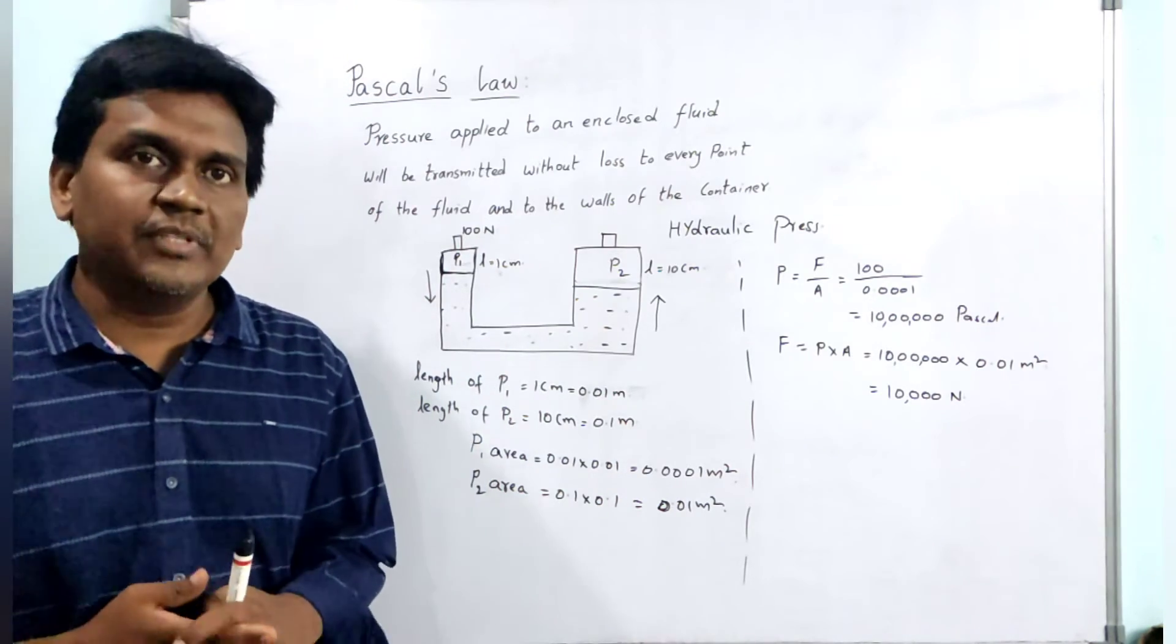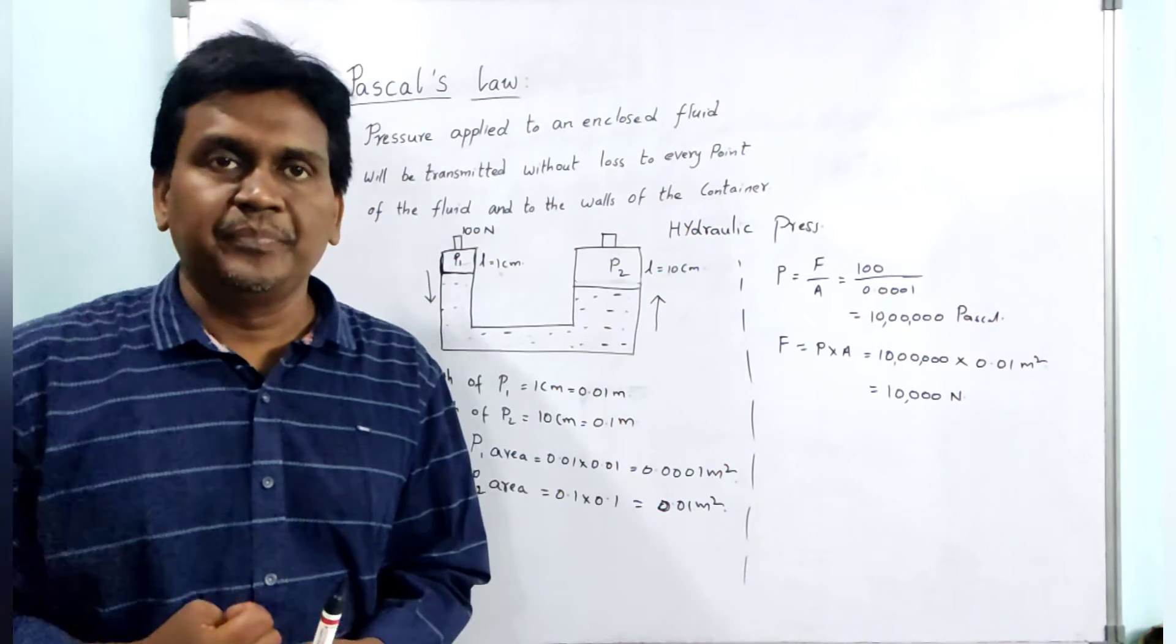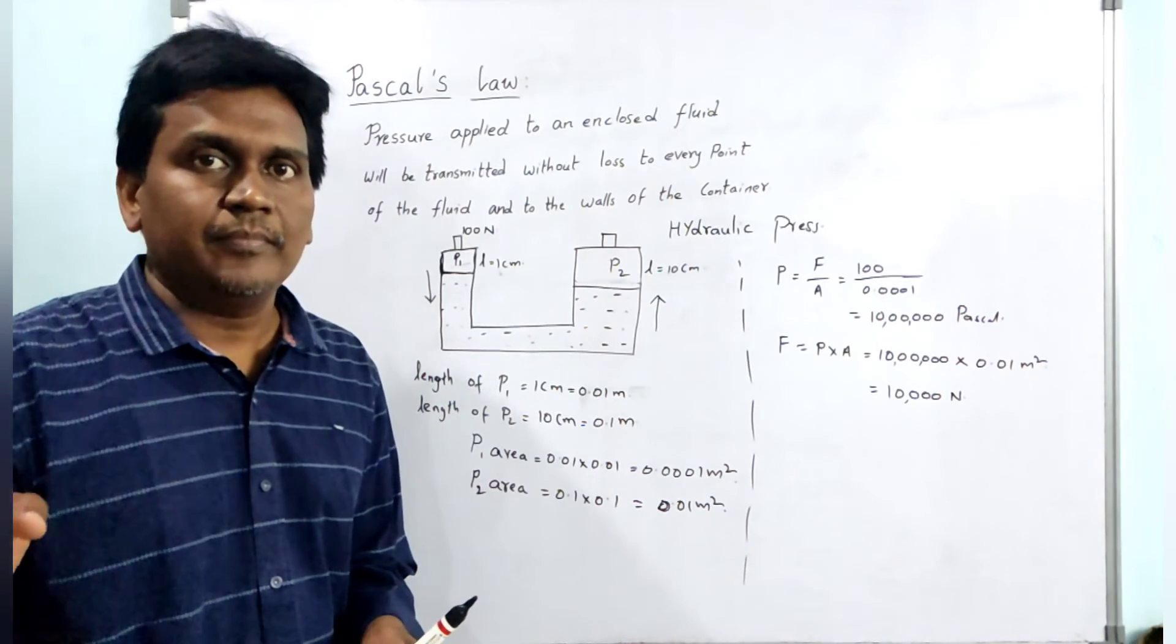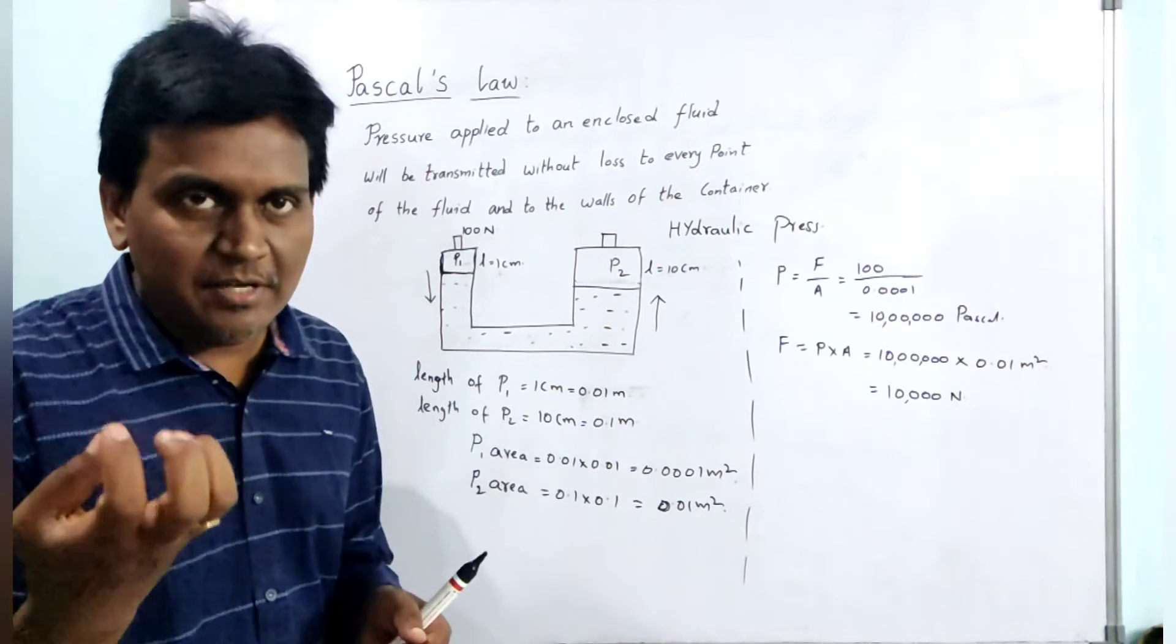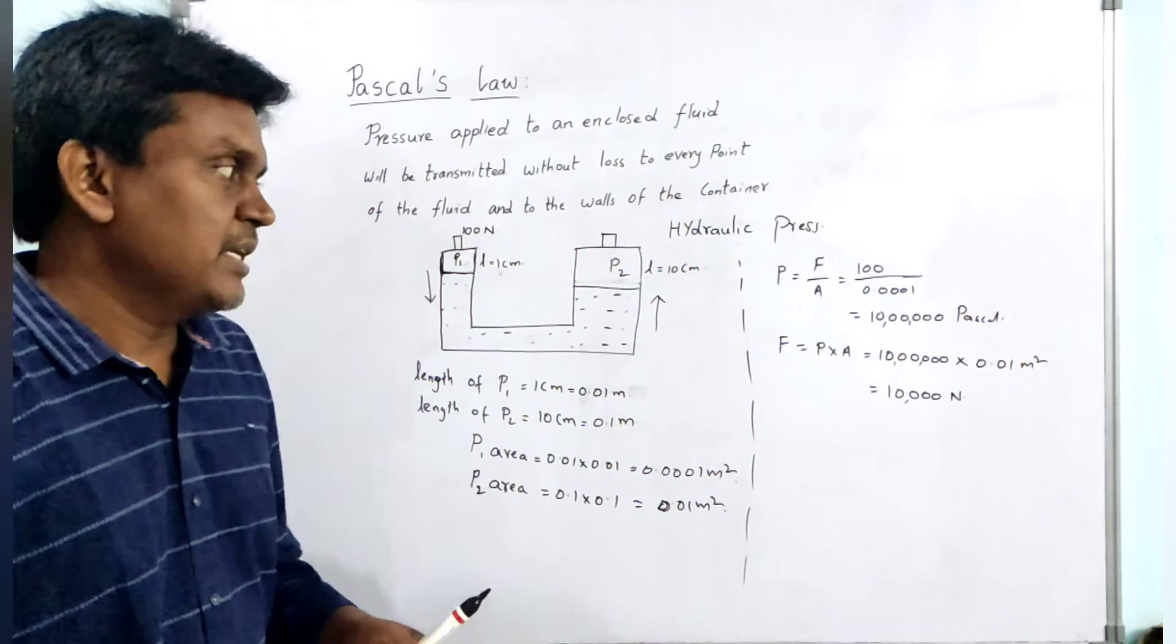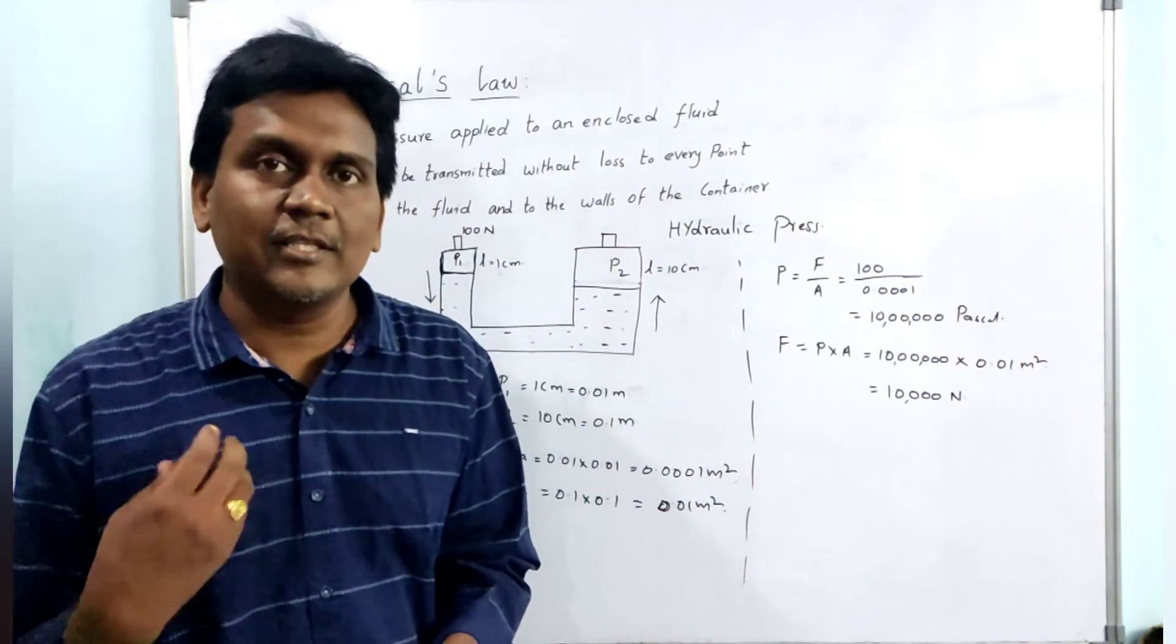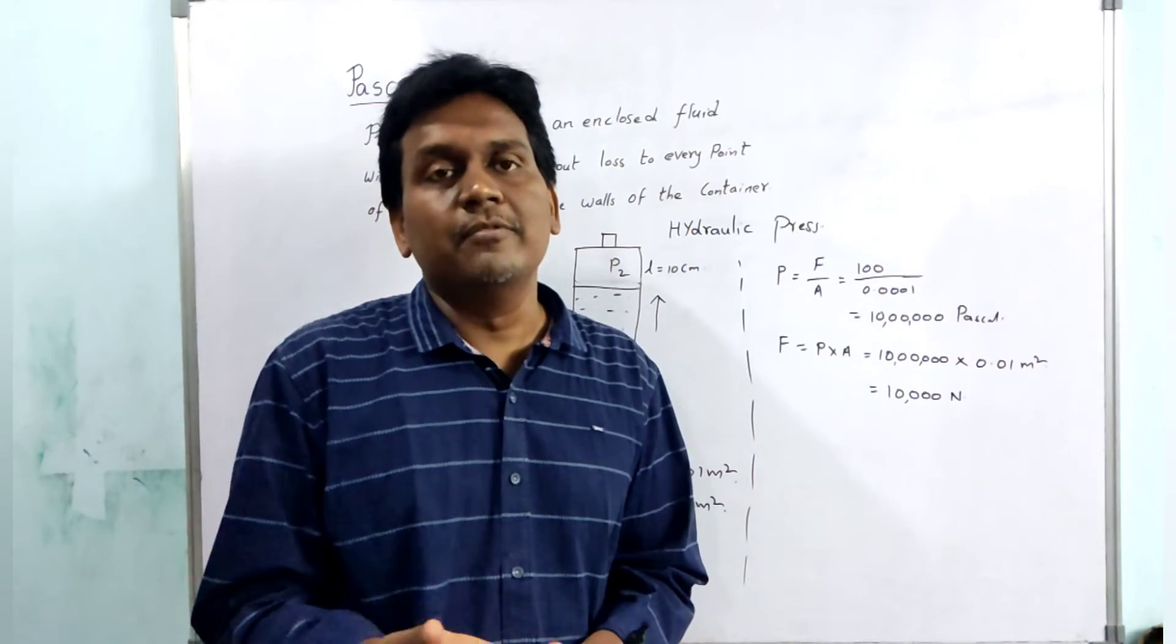If you consider the mass of the car is 1000 kg, then 1000 kg means almost 10,000 Newton will act as the weight of the car in downward direction. To lift the car, definitely the force should be more than 10,000 Newton. If the force is more than 10,000 Newton, definitely the car will be lifted up.